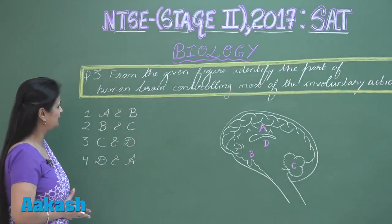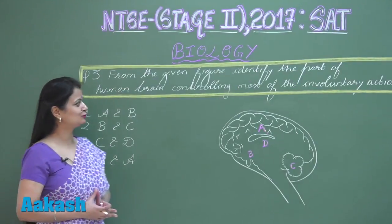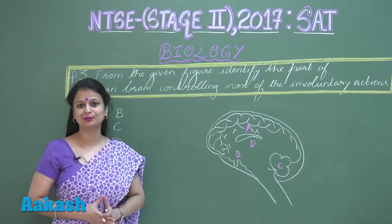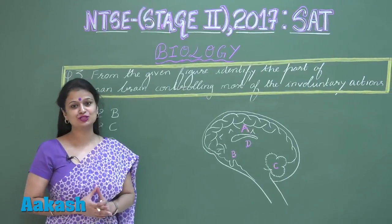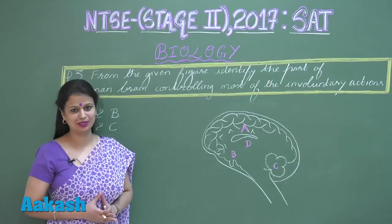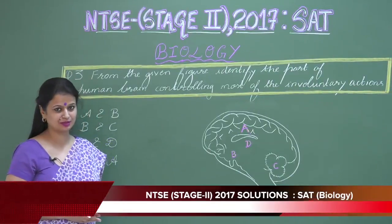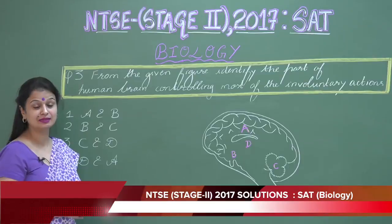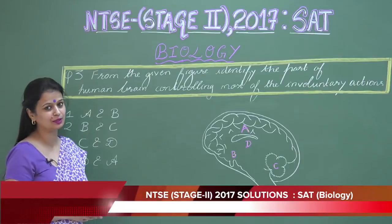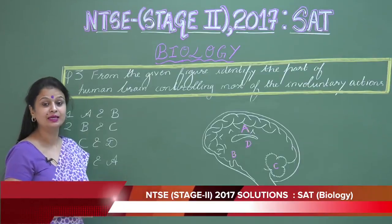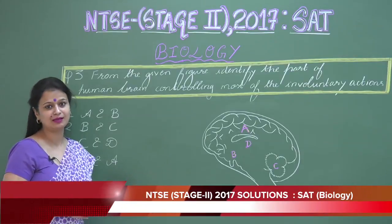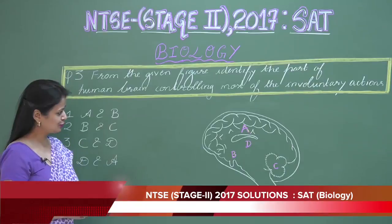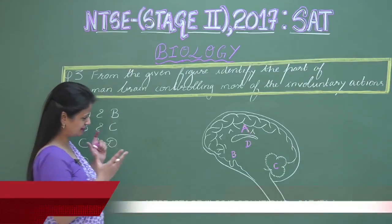In question number three, we have to look for the parts of the brain which control involuntary actions. Involuntary actions in the brain are controlled mainly by the midbrain and the hindbrain.